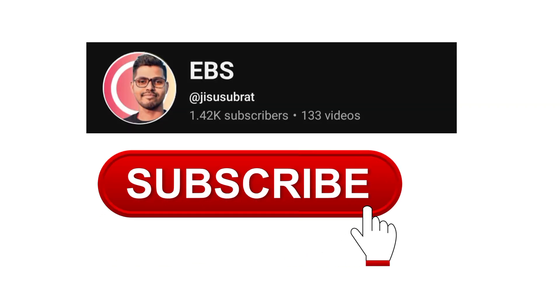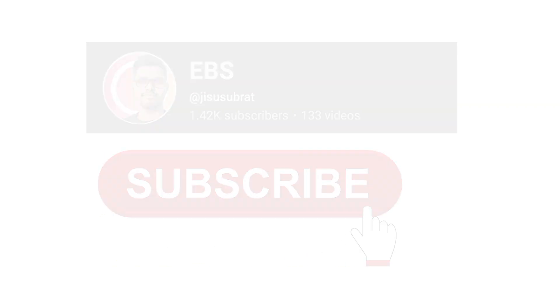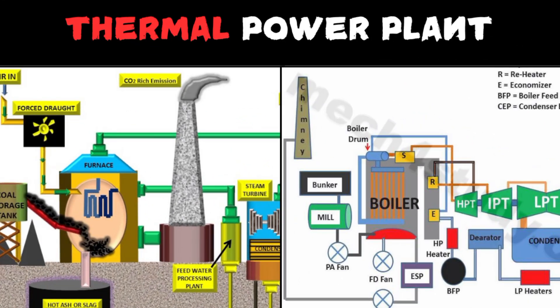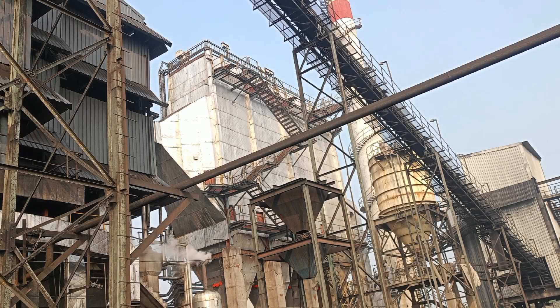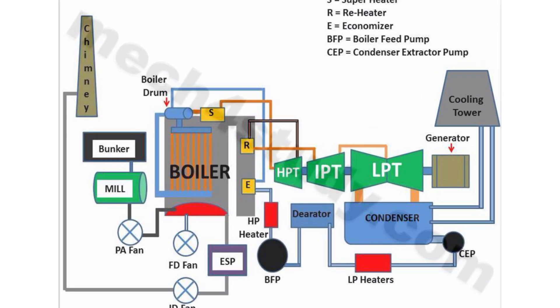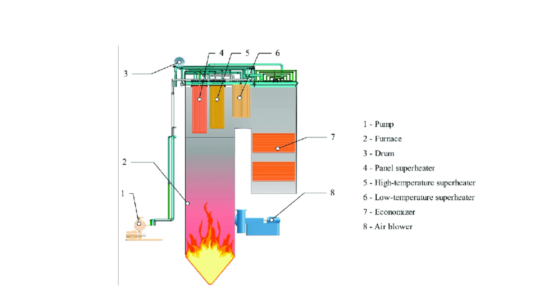Today in this video I am going to talk about the basics of thermal power plant. The thermal power plant is a type of power generation plant that uses heat energy to produce electricity. The heat energy is generated by burning fossil fuels such as coal, natural gas, or oil,